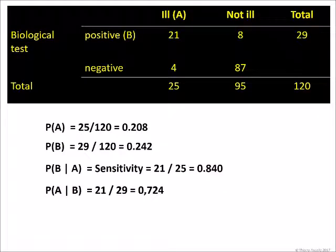We can therefore write that P of A given B multiplied by P of B is equal to P of B given A multiplied by P of A, which is the beginning of Bayes' theorem. This can be quickly verified with the data in our example. Probability of A or probability of being ill, 25 divided by 120 subjects, equals 0.208. Probability of the test being positive, 29 times out of 120 tests, equals 0.242. Probability of being ill with a positive test, the probability of B given A, is 21 positive ill divided by 25 ill, which equals 0.84. This is the sensitivity of the test,